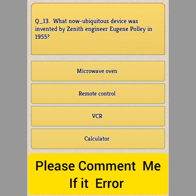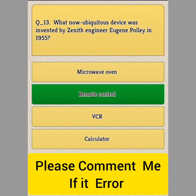Question Number 13: What now-ubiquitous device was invented by Italian engineer Ganapoli in 1955? Option A: Microwave. Option B: Remote Control. Option C: VCR. Option D: Calculator. Answer: Option B, Remote Control.